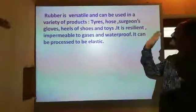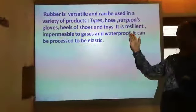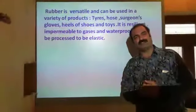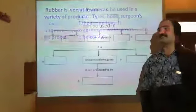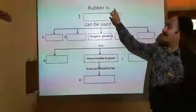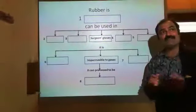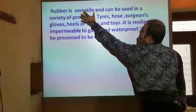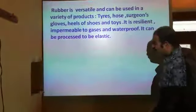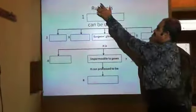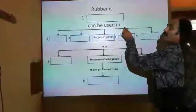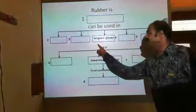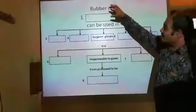It can be used to make elastic. It's a small paragraph which has been given, and under that there will be a small chart. What is 'rubber is'? Dear friends, where can you find the answer? We can see once again: rubber is versatile. Here is the answer — we can fill in 'rubber is versatile'. It can be used in — they have given one example also: surgeon gloves. So rubber can be used in surgeon gloves.